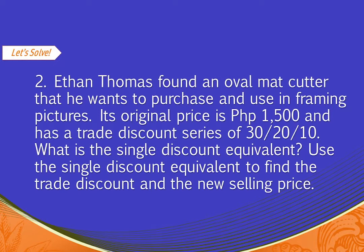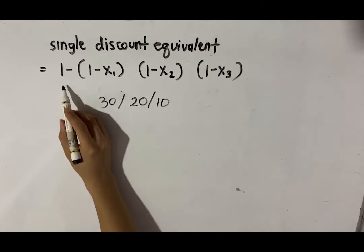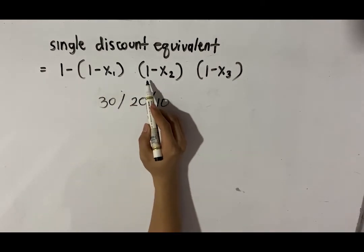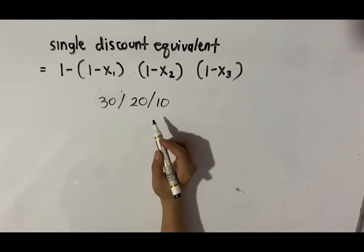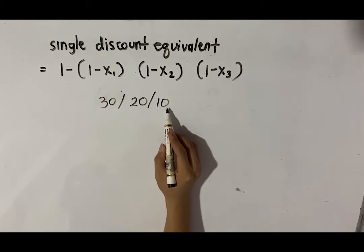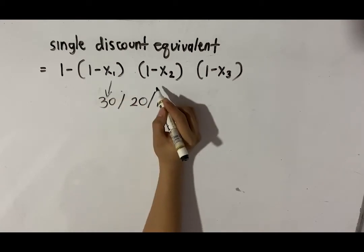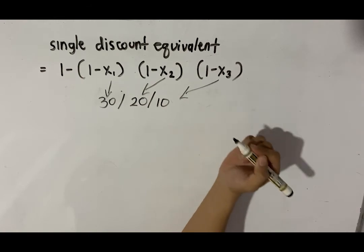Ethan Thomas found an oval mat cutter that he wants to purchase and use in framing pictures. Its original price is 1,500 and has a trade discount series of 30, 20, 10. What is the single discount equivalent? Use the single discount equivalent to find the trade discount and the new selling price. The formula is: 1 minus [(1 minus x₁)(1 minus x₂)(1 minus x₃)]. Since the discount terms are 30, 20, 10 — x₁ is 30%, x₂ is 20%, x₃ is 10%.